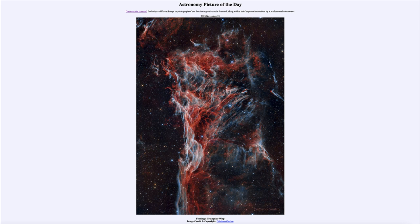The light from this supernova likely reached Earth 5,000 years ago — that would have been when we would have seen the star explode — and for those 5,000 years this material has been expanding outward in space. It's still visible after this time, though it has expanded to a very large size. The entire nebula is now about three degrees across in the sky.